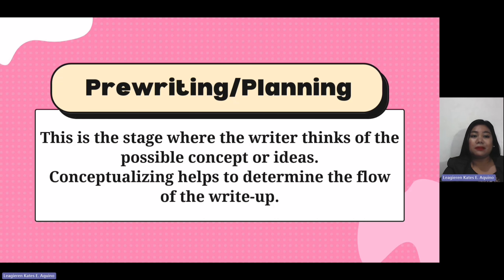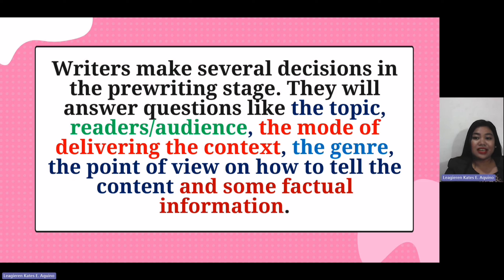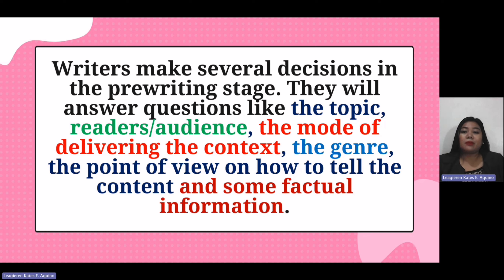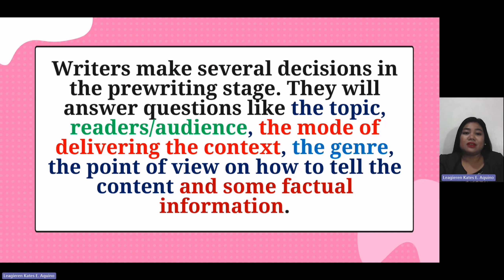Let's have first the pre-writing or planning stage. In this stage, the writer thinks of possible concepts or ideas. Conceptualizing helps to determine the flow of the write-up. Writers make several decisions in the pre-writing stage. They will answer questions like: What is the topic? Who is the target audience or target readers? What is the method of delivering the content? What are the genres to be used? Or what point of view should the author use to tell the content or factual information? You really have to think of these questions before you start writing your draft.